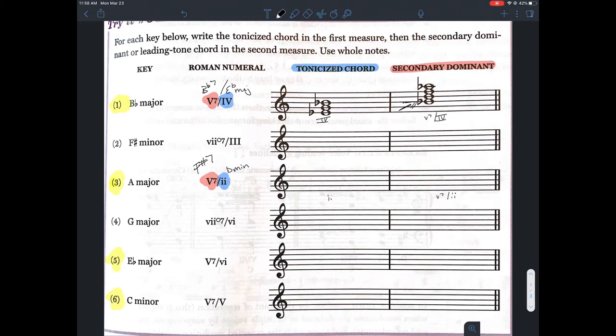We'll write out the tonicized chord first, B minor, and we'll just use accidentals if we need them.